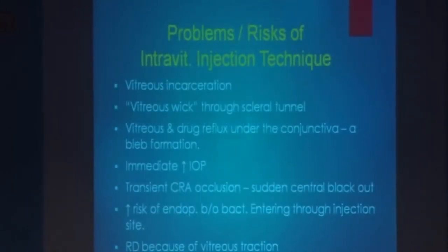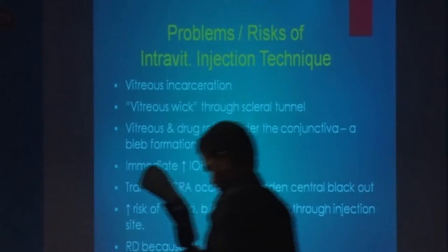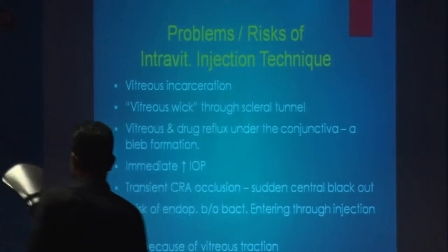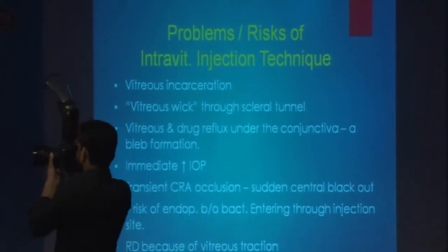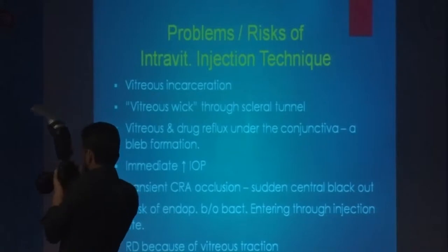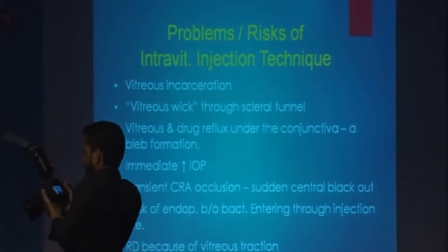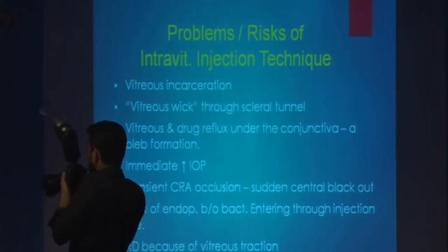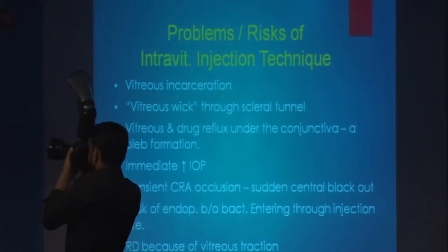The problems and risks of intravitreal injection technique include vitreous incarceration in the needle track, vitreous wick through the scleral tunnel, vitreous and drug reflux under the conjunctiva causing bleb formation, immediate rise in IOP, transient CRA occlusion — that is sudden central blackout — and the risk of endophthalmitis and retinal detachment.